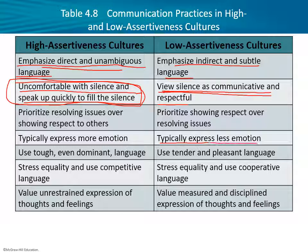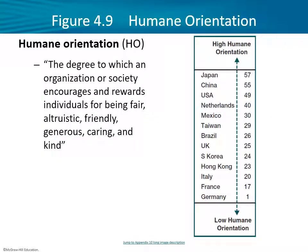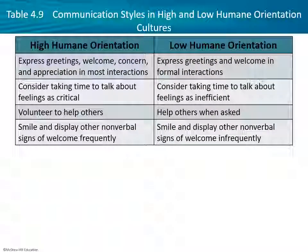Low assertiveness cultures typically express less emotion — more calm and placid — versus the high assertive culture, which typically shows more emotion. Humane orientation is the degree to which an organization or society encourages and rewards individuals for being fair, altruistic, friendly, generous, caring, and kind. Japan is apparently very humane on this scale, China is second, and the USA is third. Germany is at the low end. I'm not entirely sure how they compiled these numbers, but it is suggestive. In a high humane-oriented culture, you express greetings, welcome, concern, and appreciation in most interactions; in low humane cultures, those expressions are reserved for only informal interactions. Feelings are seen as critical versus inefficient. I'd much rather be in the high humane place.